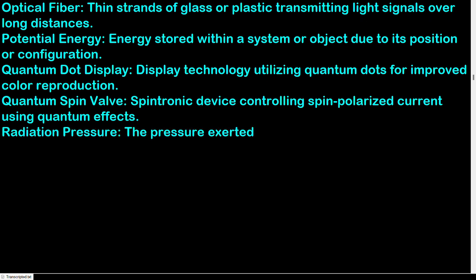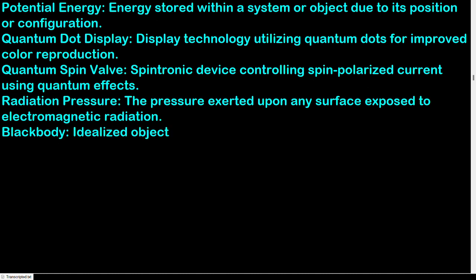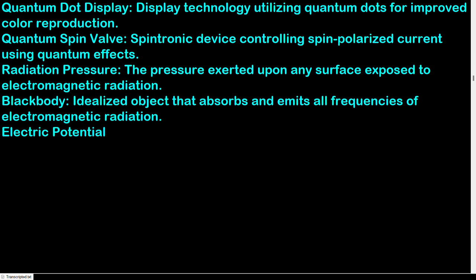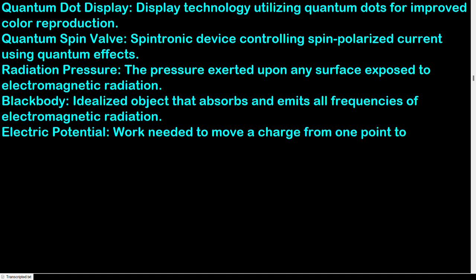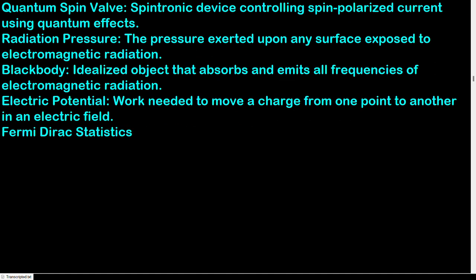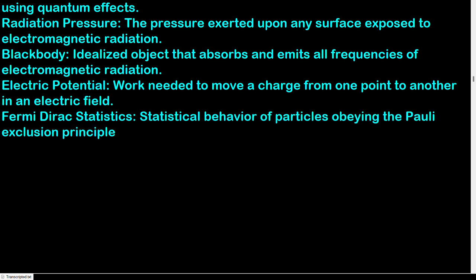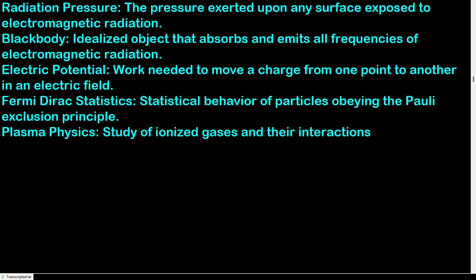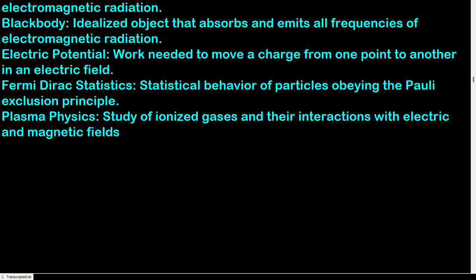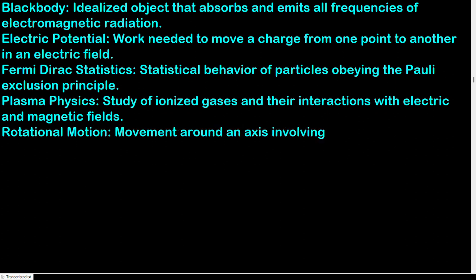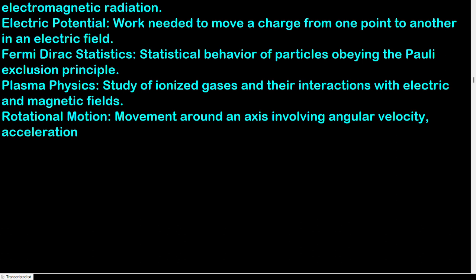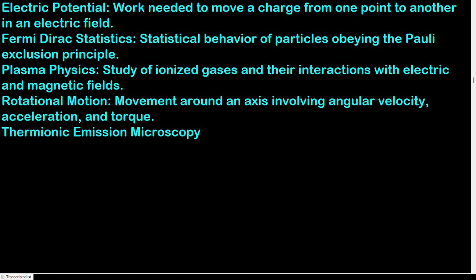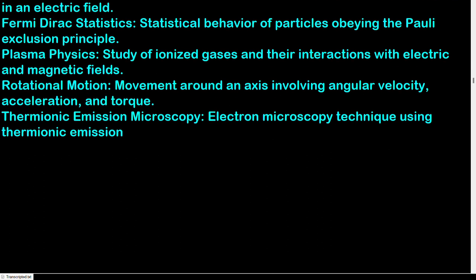Quantum spin valve: spintronic device controlling spin-polarized current using quantum effects. Radiation pressure: the pressure exerted upon any surface exposed to electromagnetic radiation. Black body: idealized object that absorbs and emits all frequencies of electromagnetic radiation. Electric potential: work needed to move a charge from one point to another in an electric field. Fermi-Dirac statistics: statistical behavior of particles obeying the Pauli exclusion principle. Plasma physics: study of ionized gases and their interactions with electric and magnetic fields. Rotational motion: movement around an axis involving angular velocity, acceleration, and torque. Thermionic emission microscopy: electron microscopy technique using thermionic emission sources.